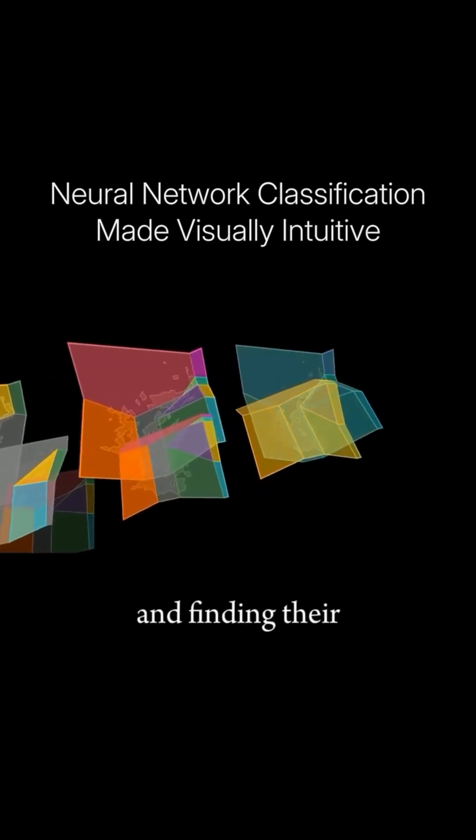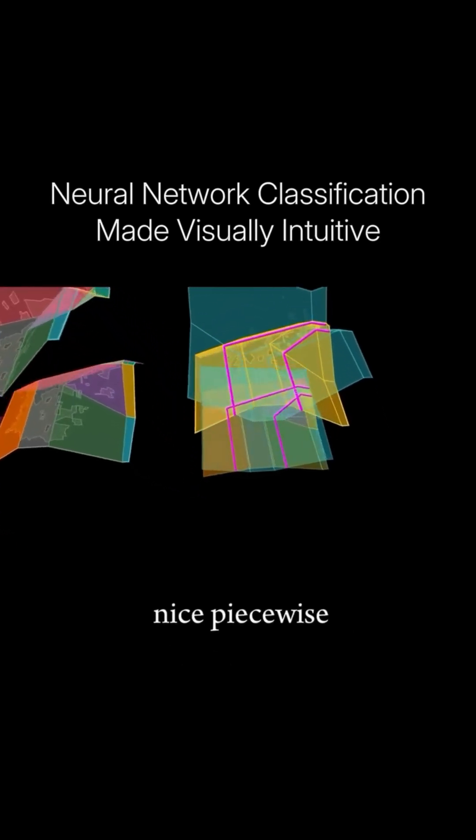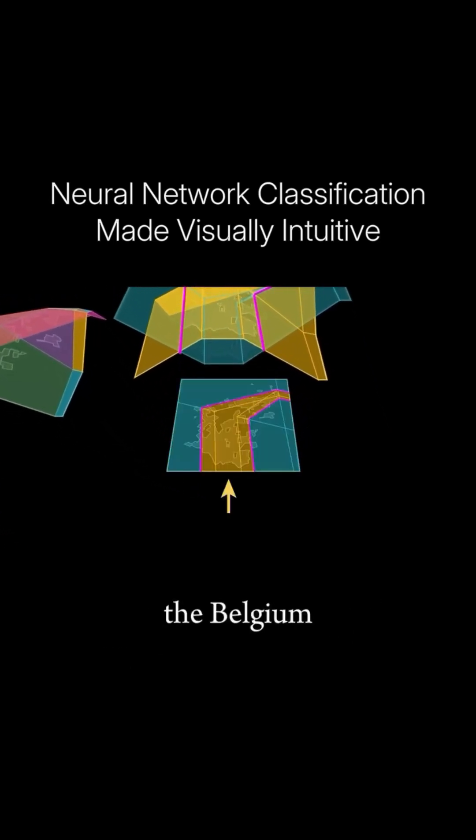Bringing these surfaces together and finding their intersection, we get this final decision boundary, which shows some nice piecewise linear curvature around the Belgian regions of our map.